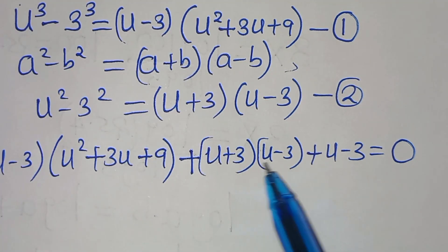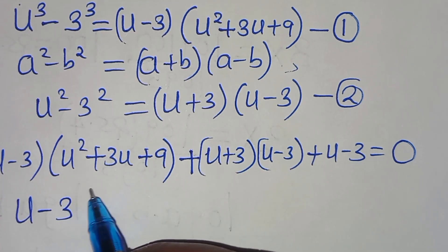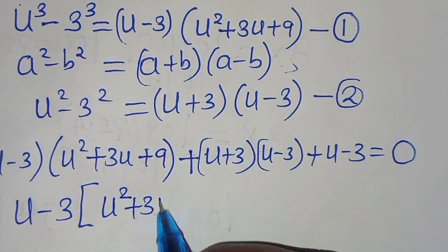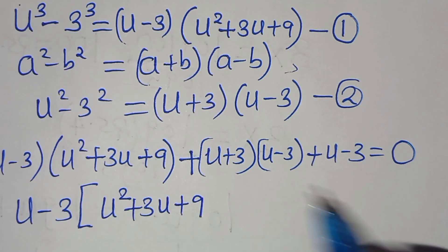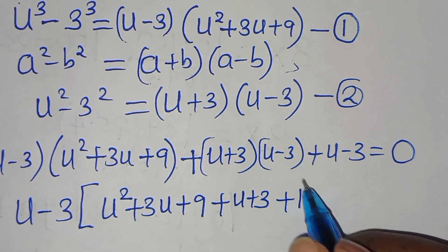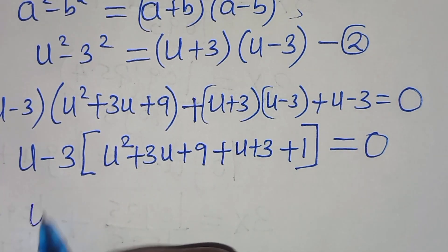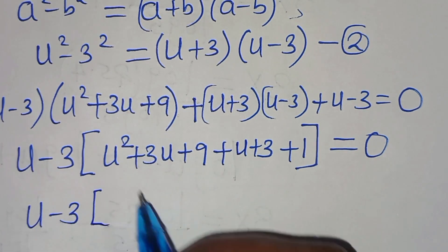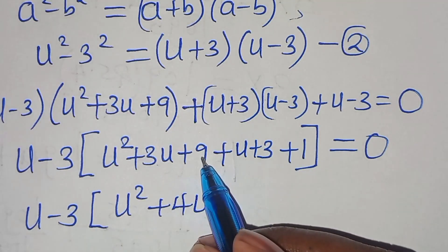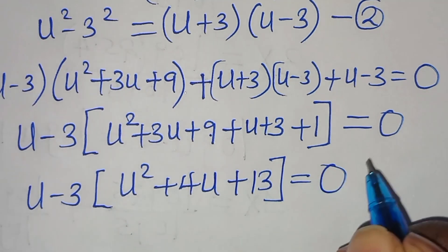As you can check, (u minus 3) is common here. We can factor out (u minus 3) so that we have (u minus 3) times (u² plus 3u plus 9 plus u plus 3 plus 1) equals 0. Combining like terms inside the parentheses: u² plus 4u plus 13, so we have (u minus 3)(u² plus 4u plus 13) equals 0.